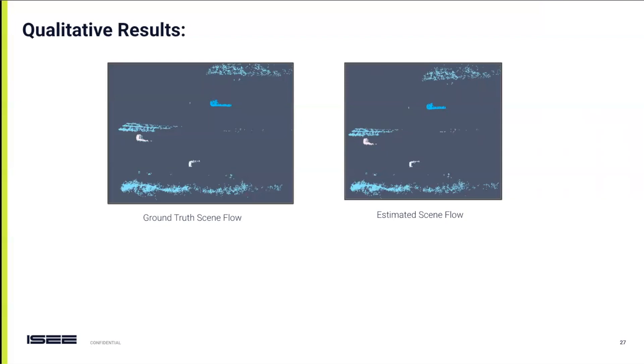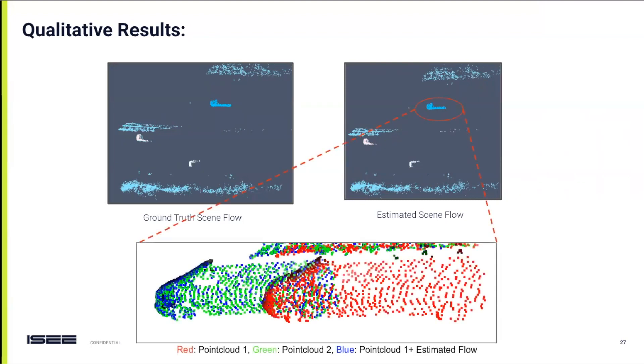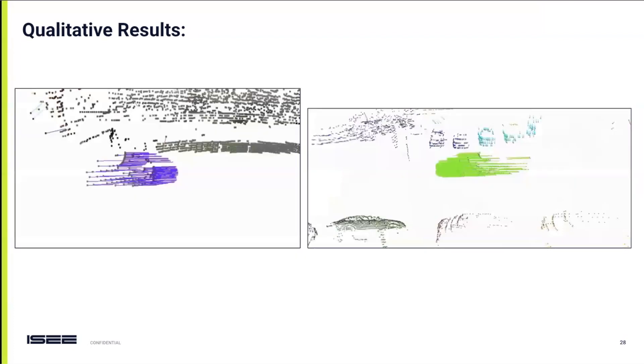To visually illustrate our findings, consider these scene flow images. On the left, you see the ground truth scene flow, and on the right are our results. The color intensity indicates flow values, and you can see the striking similarity between our results and the ground truth. Zooming in on a vehicle, the colors represent different timestamps, with blue indicating a projected point cloud aligning perfectly with the target point cloud in green.